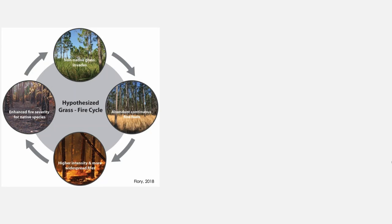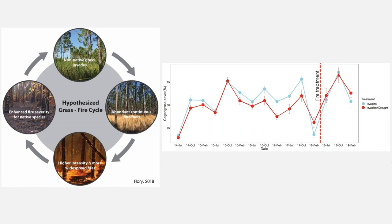Looking at the longer-term picture, we're thinking about the grass-fire cycle: a non-native grass such as Cogongrass or Microstegium invades, results in abundant continuous fine fuels, higher intensity and more widespread fires, and therefore enhanced fire severity for native species while relatively less damage to the invader. This creates a positive grass-fire cycle. A new PhD student is continuing to track survival of trees and native species abundance and diversity in these plots. After the fires were applied in April 2018, we saw a big boost in Cogongrass cover following the fires.